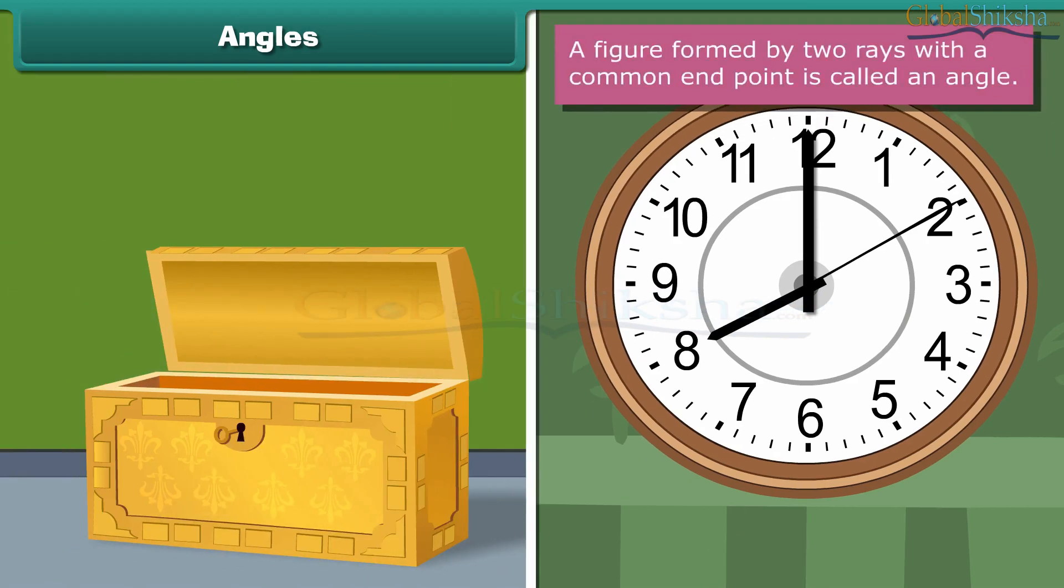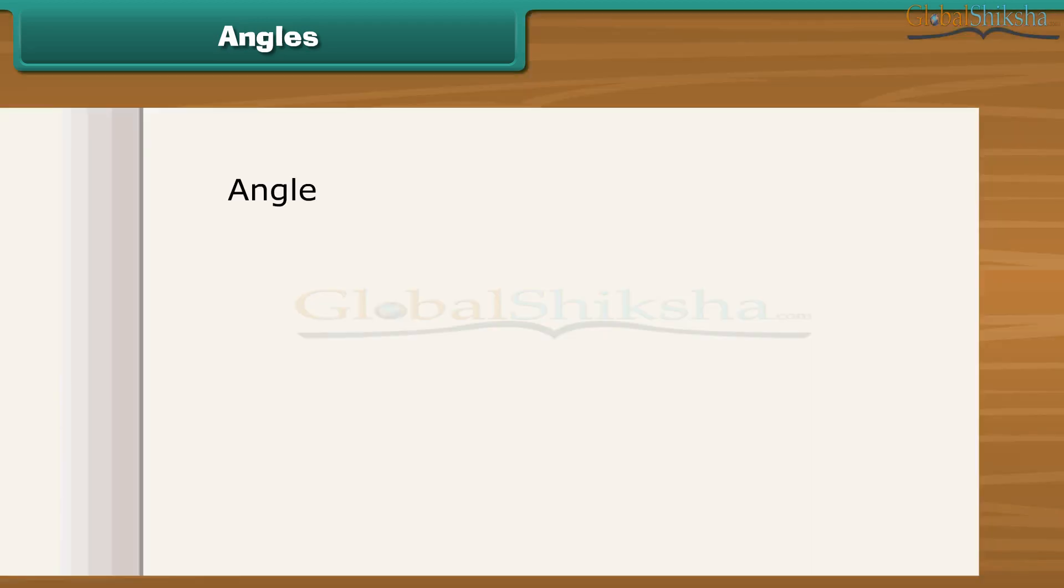A figure formed by two rays with a common endpoint is called an angle. An angle is represented by the given symbol. This is angle ABC. It is represented as angle ABC.